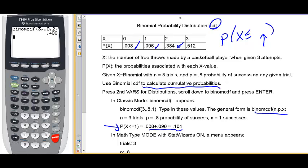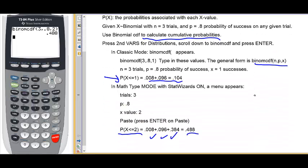So, just remember, binomial CDF finds cumulative probabilities that X is less than or equal to whatever X value that you specify. Hope this has been helpful. This concludes this video.